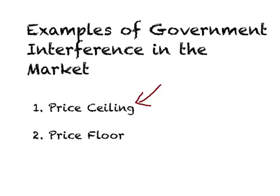Another example of government interference is, for example, if you are looking at sellers and whatever they sell, the market may not give them a price which will afford a decent level of living. In this case, the government may step in and create what is called a price floor. In this lesson, we look at the case of government interference when it is trying to help certain sections of the society, what concepts the government uses, and what are the consequences of that.